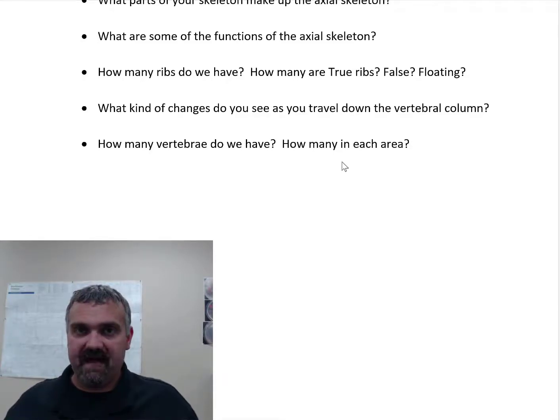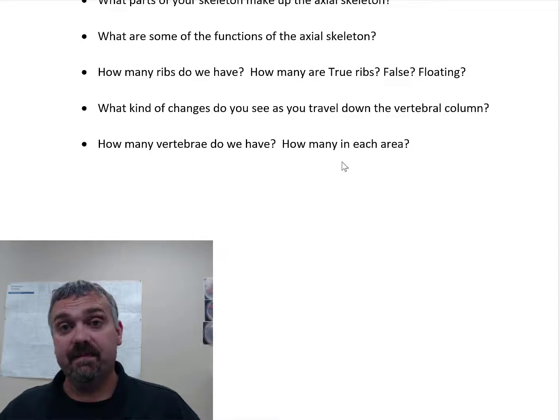They're little ribs that are only in the back, kind of protecting your kidneys. So 12 pairs of ribs, the first 7 pair are true because they attach directly to the sternum. Ribs 8, 9, and 10, they attach to the cartilage of 7, not to the sternum, so they're considered false ribs. And then the floating ribs, those last 2 pairs of ribs are floating ribs because they don't attach in the front at all.